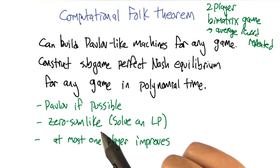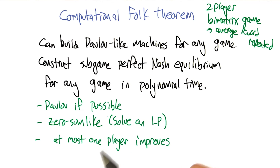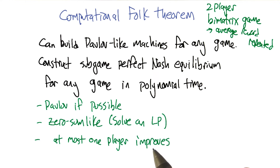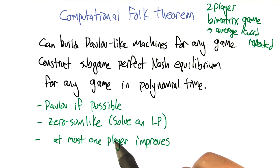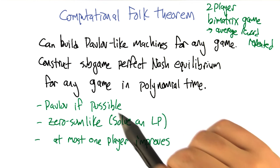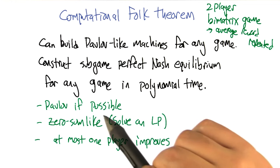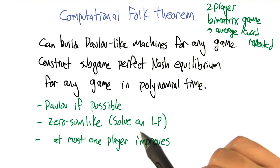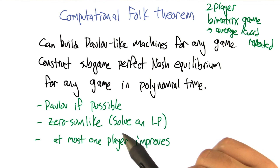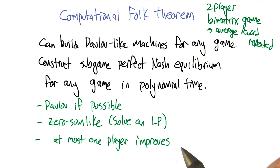So either that works and produces a Nash equilibrium, and we can test that. Or it doesn't work, but at most one player can improve its behavior. And by taking that best response against what the other player does in a zero-sum-like sense, that will be a Nash equilibrium. So there are three possible forms of the Nash equilibrium, but we can tick through these, figure out which one is right, and derive the actual strategies in polynomial time.